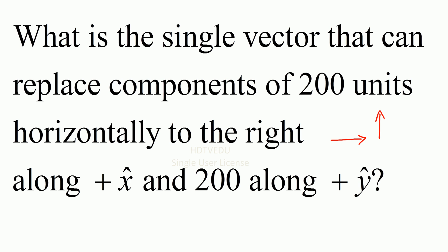What is the single vector that can replace components of 200 units horizontally to the right and 200 units along positive y?